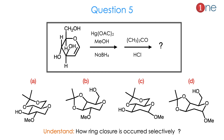Then question number 5. The starting material is a 6-membered heterocyclic system with one oxygen inside and a CH2OH group — essentially a glucose-type system. The OH and hydrogen differ in position. You are using mercuric acetate and methanol, then sodium borohydride, then acetone and HCl. They ask you to guess the product, which is mostly a cyclized product differing in bonding. You have to determine how the ring closure occurs selectively — which group dominates and which OH is involved.